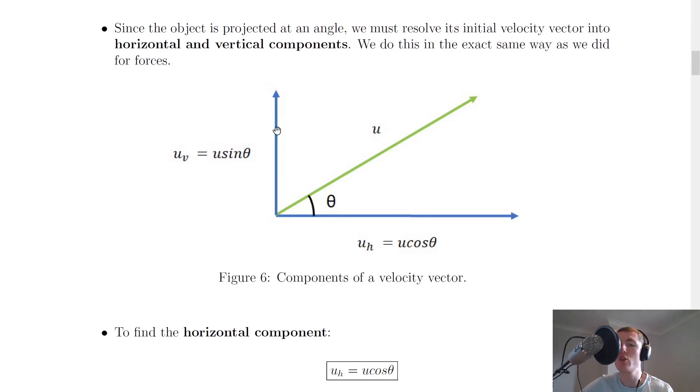So we can use SOH CAH TOA to get the two components. So for this one over here if we did cos theta equals adjacent over hypotenuse, then that means we could rearrange for this component to get u_h equals u cos theta where u_h is just your horizontal component.